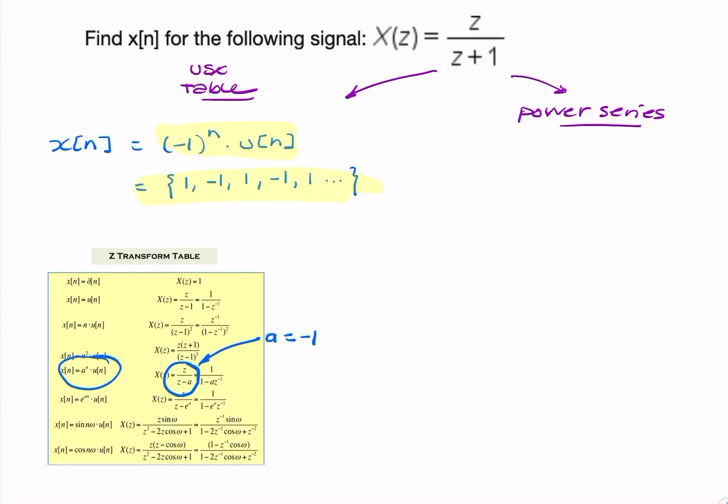I could have also written it out as a power series. I could have said that x of z can be rewritten as 1 over 1 plus z to the minus 1. And that's the same as saying a power series, where we have minus z to the minus 1 to the power k from k equals 0 to infinity. And I can rewrite that as minus 1 times z to the power k.